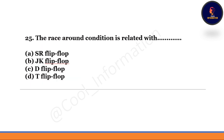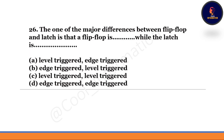Next question: The race around condition is related with which flip-flop — SR flip-flop, JK flip-flop, T flip-flop, or D flip-flop? The stated correct option is option A — SR flip-flop. Next question: One of the major differences between a flip-flop and a latch is that a flip-flop is edge-triggered while the latch is level-triggered. Just remember these things — these questions are very important.